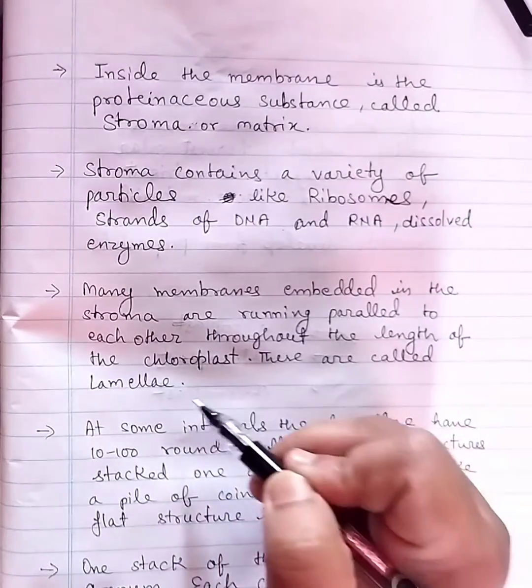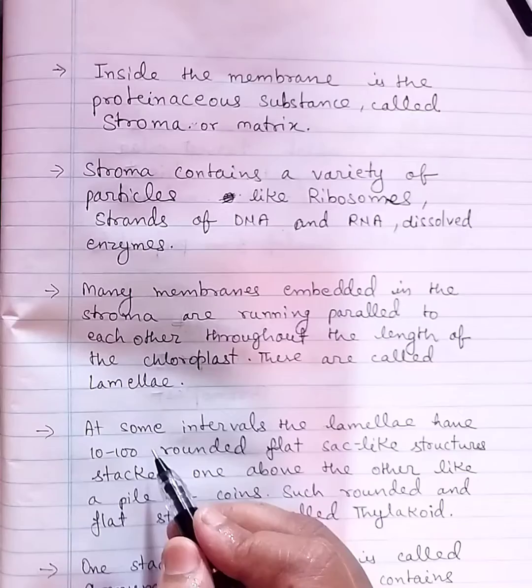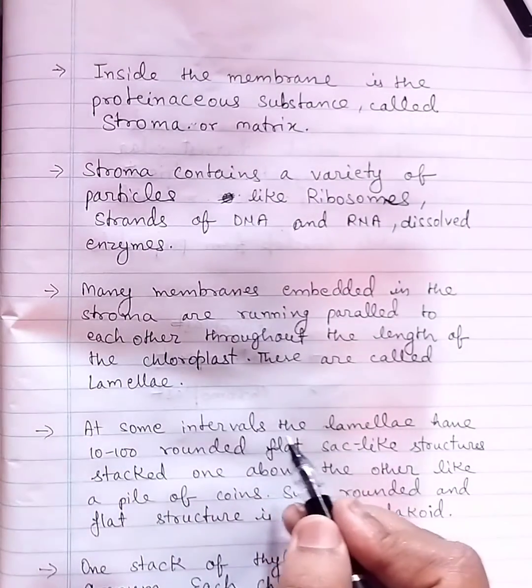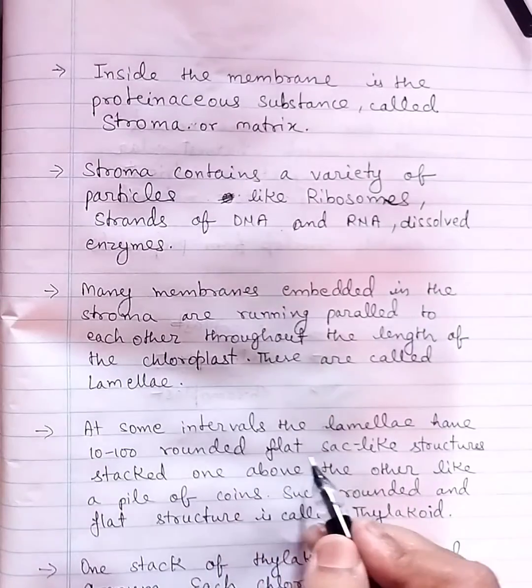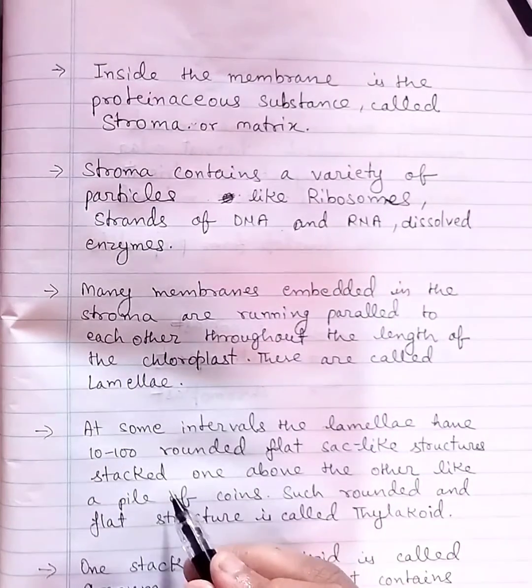These are called lamellae. At some intervals, the lamellae have ten to one hundred rounded, flat, sac-like structures stacked one above the other like a pile of coins.